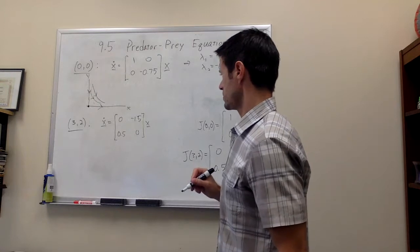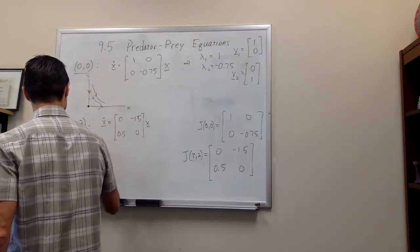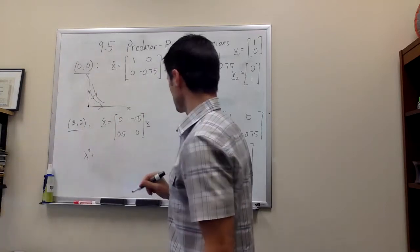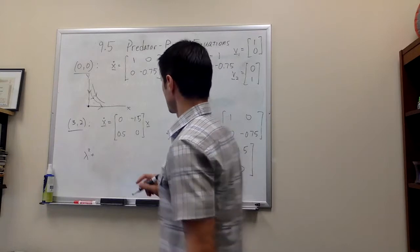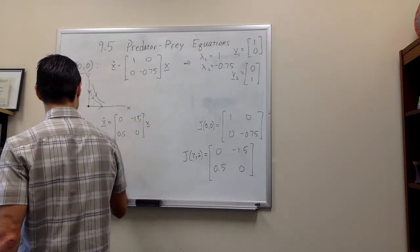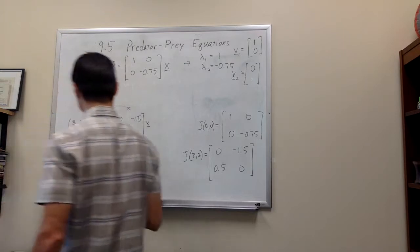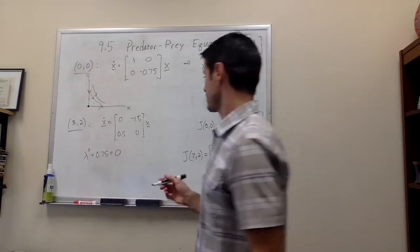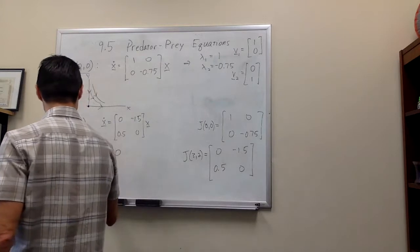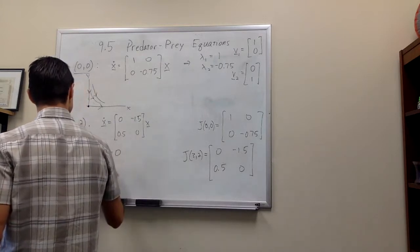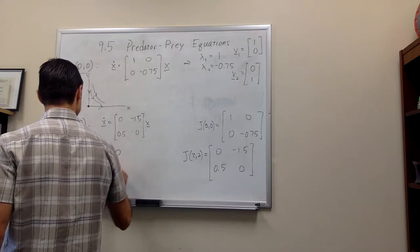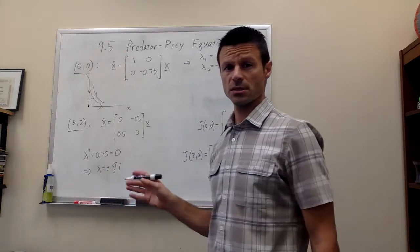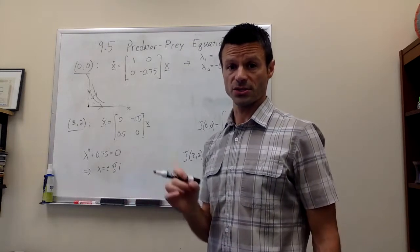And when we go to compute the eigenvalues, the characteristic equation is lambda squared, and that turns out to be plus 0.75 equal to 0. So what you see here is that we're going to get imaginary roots. So lambda is equal to plus or minus root 3 over 2i. And so if you remember from linear systems, this means we have what's called a center.